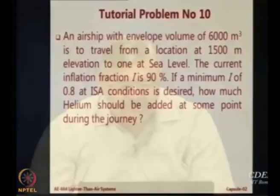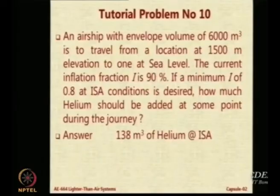What is the value of sigma at sea level? It is 1. The current inflation fraction is 0.9, that is I1. So I2 will be 0.9 into 0.8637, which is 0.777. But the minimum desirable value is 0.8. So there is a shortfall of 0.8 minus 0.777, equal to 0.023. That shortfall multiplied by the volume of the envelope gives the helium to be filled — that is 138 meter cube of helium at sea level.